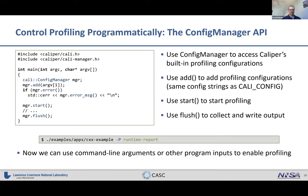To use the profiling API, you create an object of the CalperConfigManager class and use the add method to add a profiling configuration string — using the same syntax as the CALI_CONFIG environment variable. Then you use start() to start profiling, stop() to pause it, and flush() to collect and write output. As an example, you can now use a command line argument like -p runtime_report to enable profiling rather than using the environment variable.